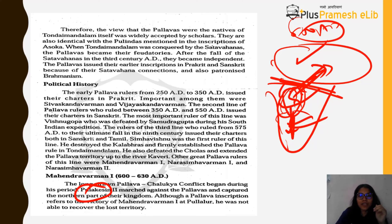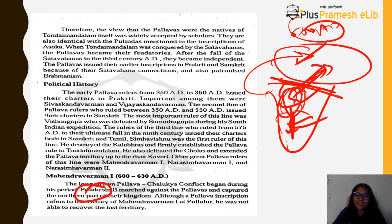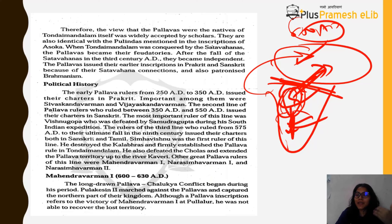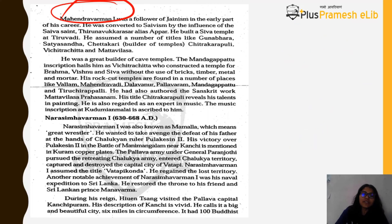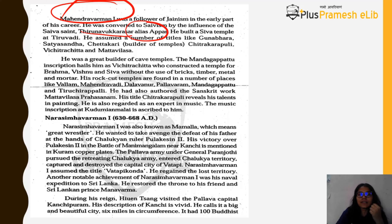Pulakeshin II captured the northern part of the Pallava kingdom. Although a Pallava inscription located at Pullalur refers to a victory of Mahindra Varman — similar to how Harsha's pillar referred to his own victory — Mahindra Varman was still unable to recover the lost territory. Mahindra Varman was a follower of Jainism in the early part of his career, but was later converted to Shaivism by the Shaiva saint Thiru Navukkarasar, also known as Appar.